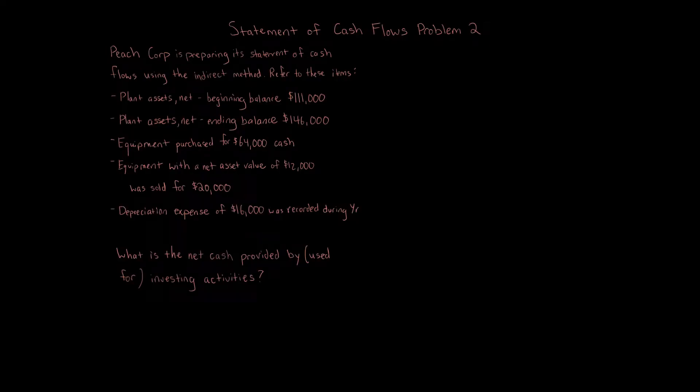Statement of Cash Flows Problem 2: Peach Corp is preparing its Statement of Cash Flows using the indirect method. Refer to these items: Plan Assets Net Beginning Balance $111,000, Plan Assets Net Ending Balance $146,000, Equipment Purchase for $64,000 Cash, Equipment with a Net Asset Value of $12,000 was sold for $20,000, Depreciation Expense of $16,000 was recorded during the year. What is the Net Cash Provided By or used for investing activities?